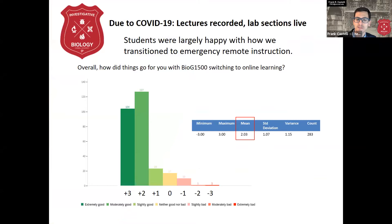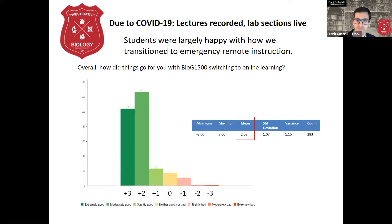This graph shows how we did that semester during the remote transition. Students anonymously at the end of the semester in their evaluations said that we did a moderately good job, and many said we did an extremely good job. So the students were happy with how the class went.